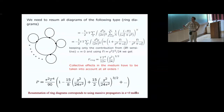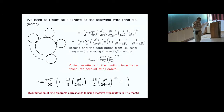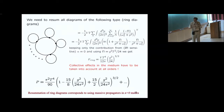A lot of the problems we encounter later on are already visible in the scalar field theory example. There are some additional problems in QCD specific to the non-Abelian nature of the theory, but a lot of what we will discuss is already shown in this example. So now let's consider gauge theory at finite temperature.